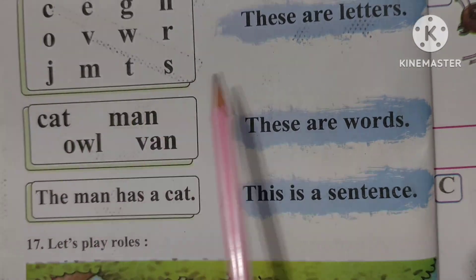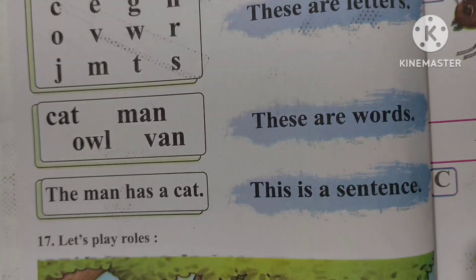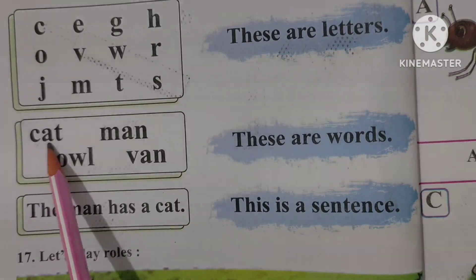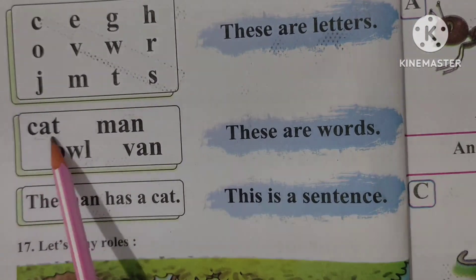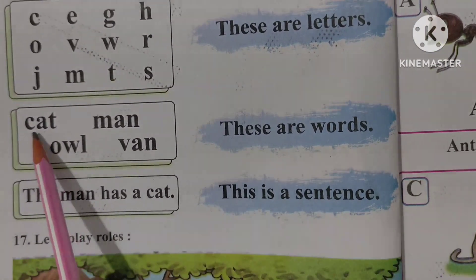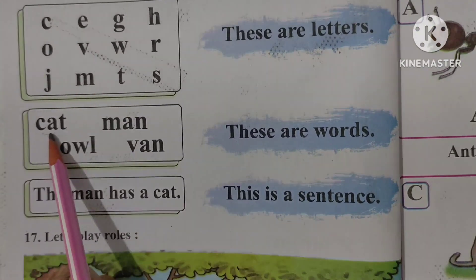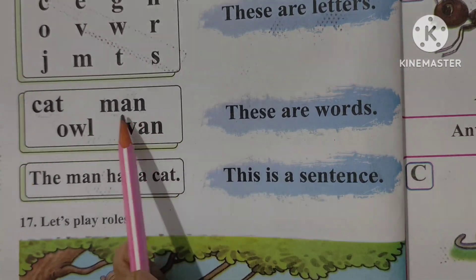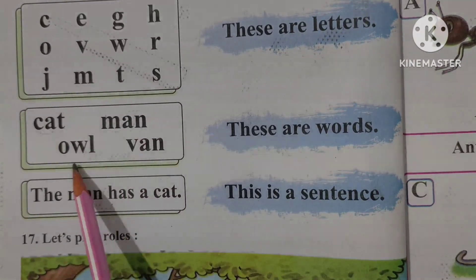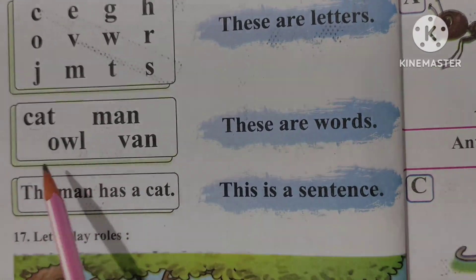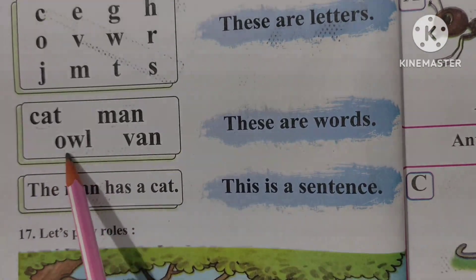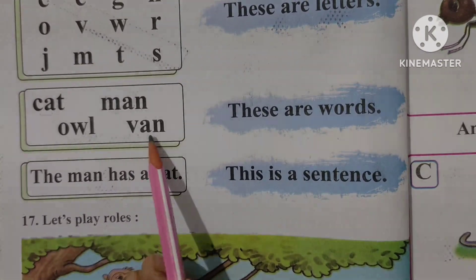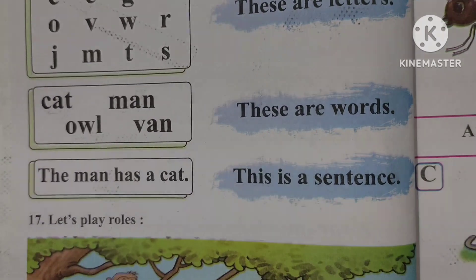Cat, man, owl, van. Cat, man, owl, van, these are words. See, C A T, three letters make a word. Man, M A N. Owl, O W L, three letters. Van, V A N.